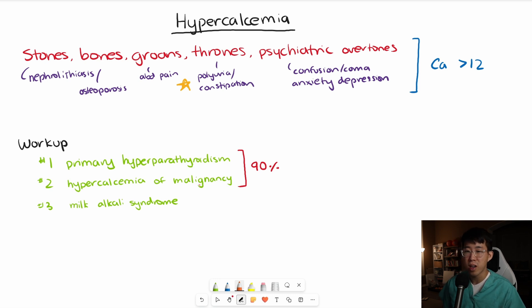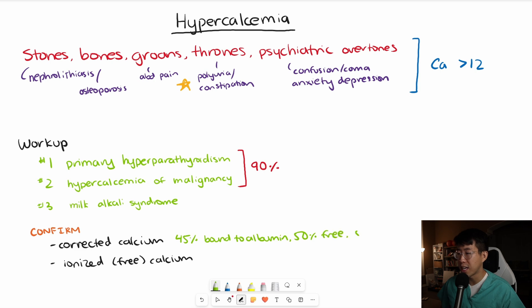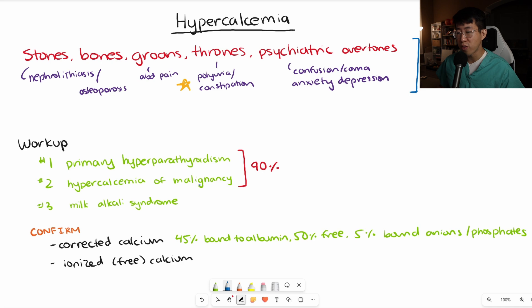What exactly do we order? The first thing is you need to confirm the hypercalcemia. You're either going to calculate a corrected calcium value or check an ionized or free calcium. The reason we have a correction for calcium is because 45% of calcium is bound to albumin, 50% is free, and about 5% is bound to anions and phosphates. If you have a patient with low albumin, this falsely lowers your total calcium level.